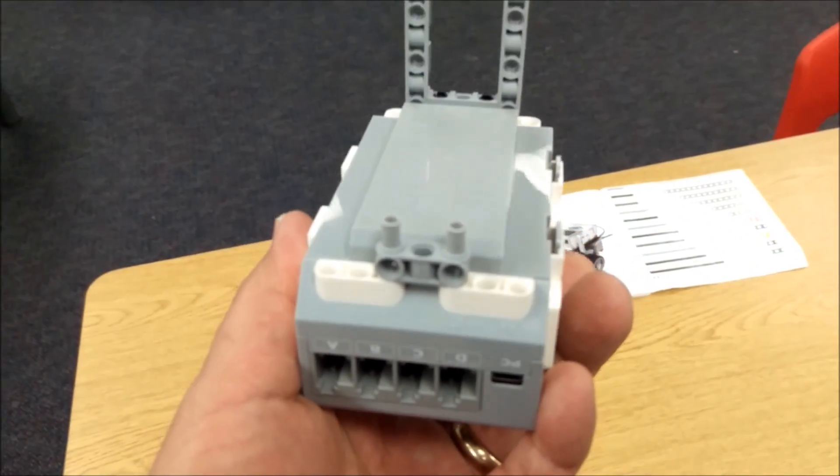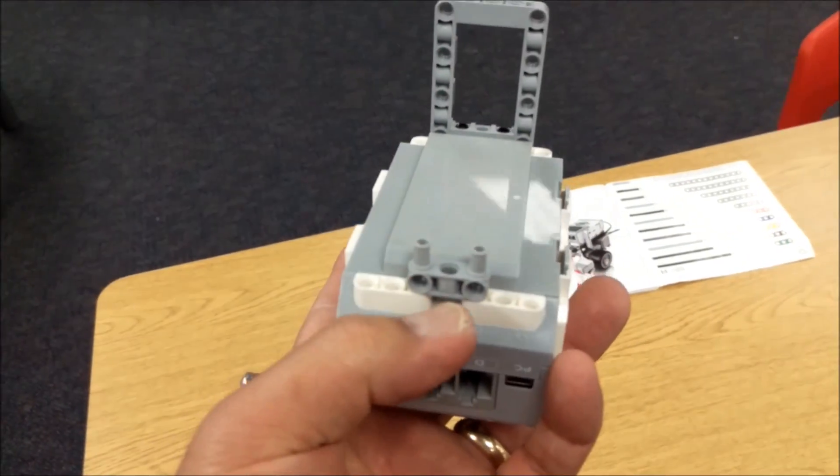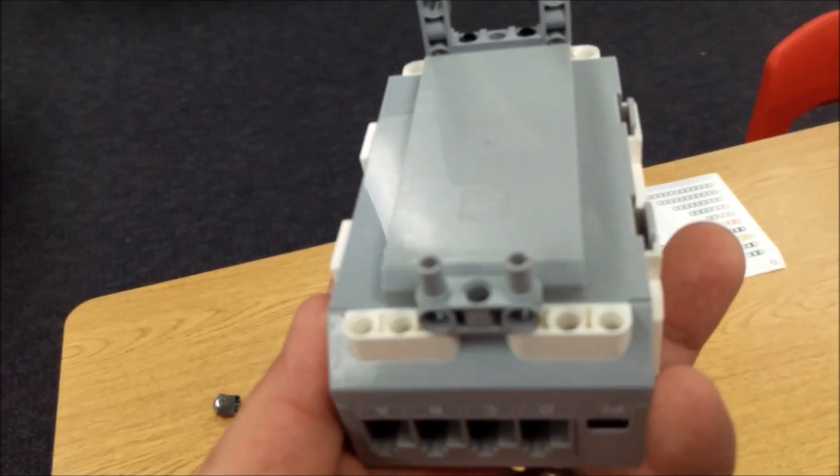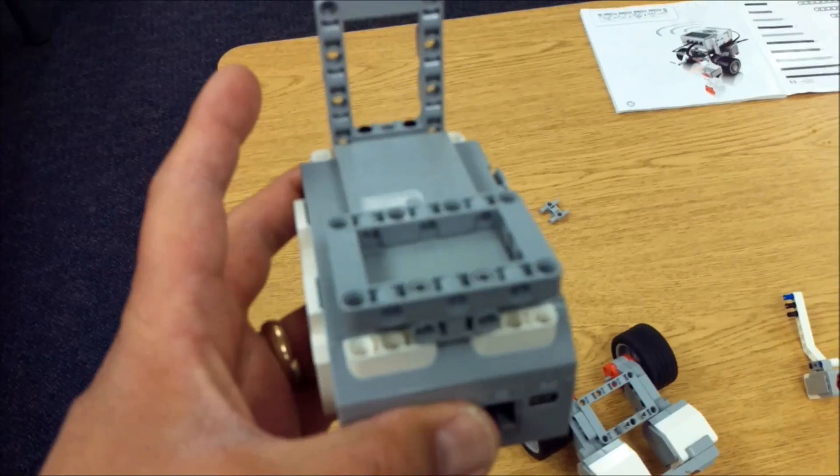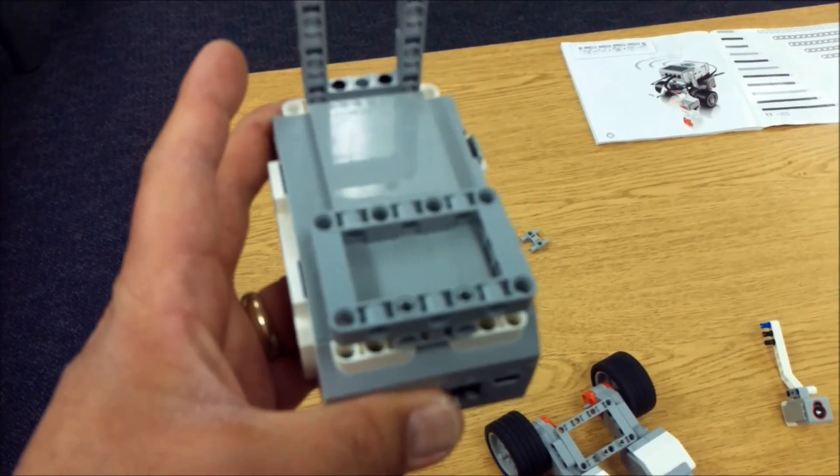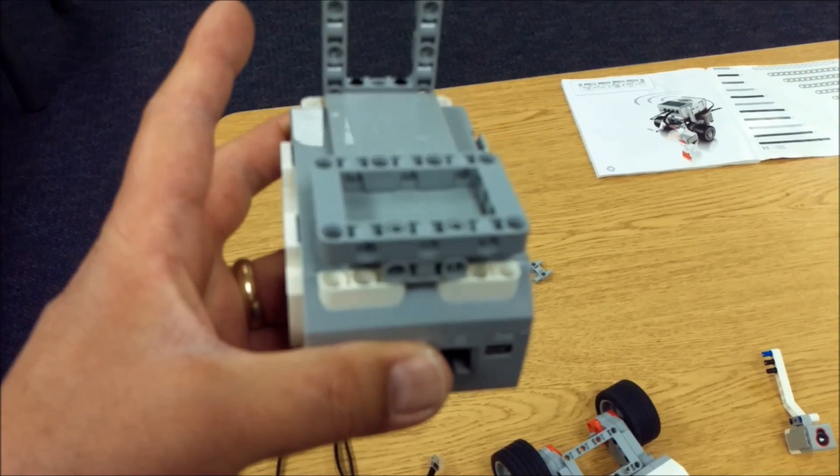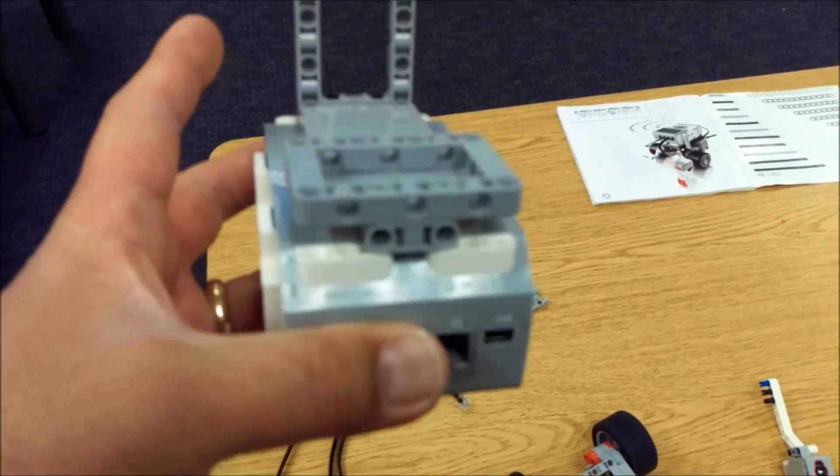I flipped the brick around and in the front, you're going to put one of these H gray pieces right there. And then you'll put that last gray square onto that H piece like so.